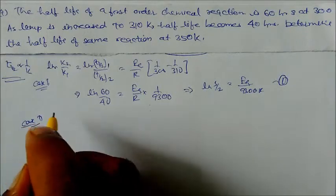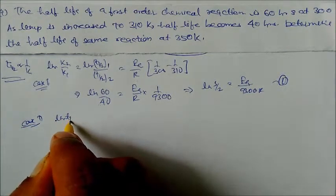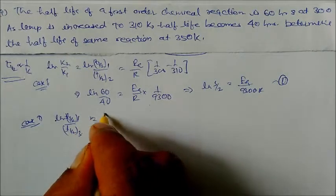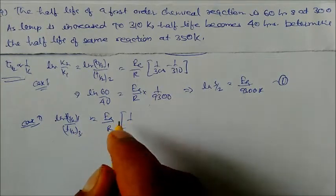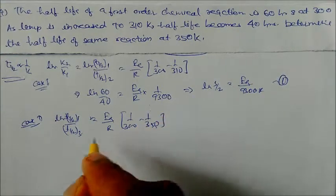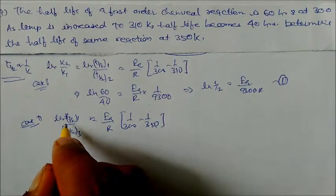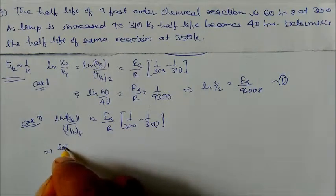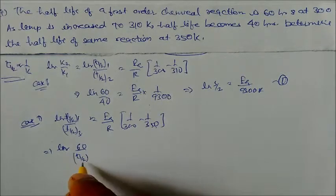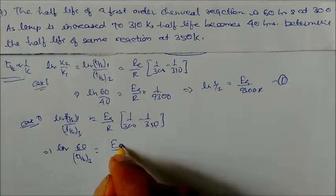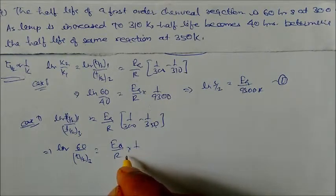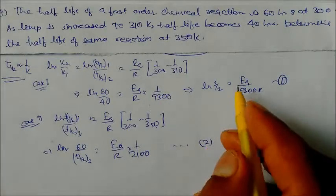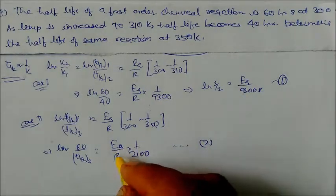Dividing equation 2 by equation 1, the EA/R terms cancel. We get: ln(60 / t½₃₅₀) divided by ln(3/2) = 9300/2100 = 31/7. So we solve: log(60 / t½₃₅₀) = (31/7) × log(3/2).